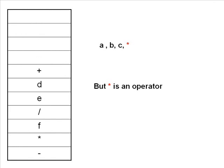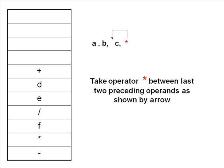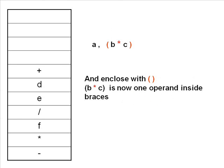The next character to be popped is the multiplication symbol — star. Multiplication is an operator, so we follow a simple rule: whenever an operator is encountered, it will be pushed between the last two preceding operands. As you can see, star is placed between B and C, making B*C a single operand. We enclose it in brackets so it is treated as a single operand.